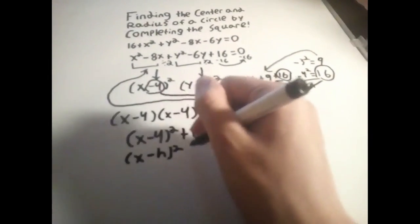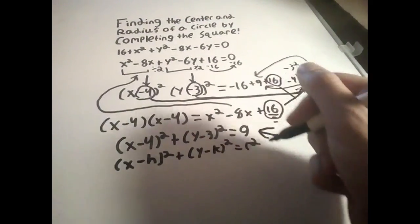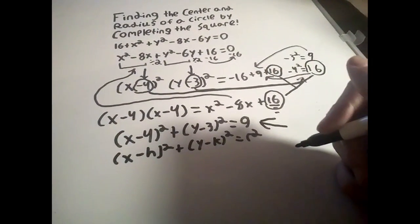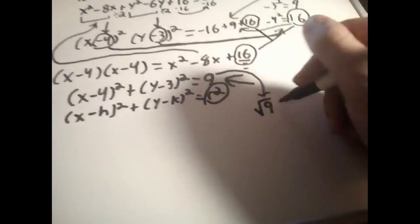But we're not done yet. We still need to find the center and radius. If you remember from earlier, based on the base circle equation, the sole constant on the right side is our radius squared. So to find the actual radius, we just need to take the square root of 9, which is 3.